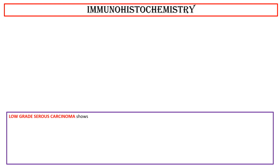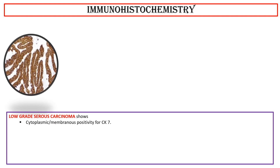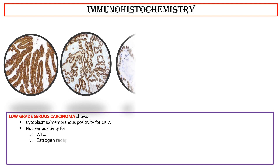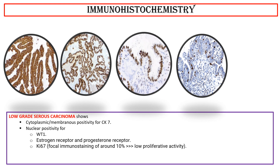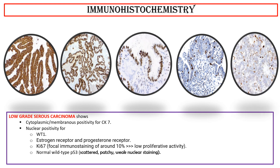Immunohistochemistry: Low-grade serous carcinoma shows cytoplasmic and membranous positivity for CK7, nuclear positivity for WT1, estrogen receptor, and progesterone receptor. Ki67 focal immunostaining of around 10%, indicating low proliferative activity. Normal wild-type P53 pattern with scattered patchy weak nuclear staining. Negativity for cytokeratin 20 — that is, it is CK7 positive, CK20 negative.